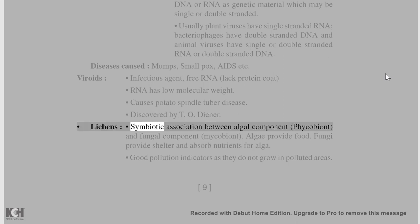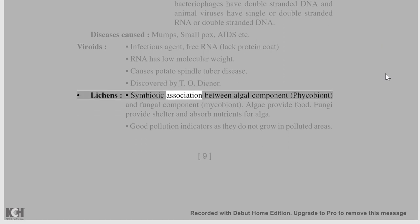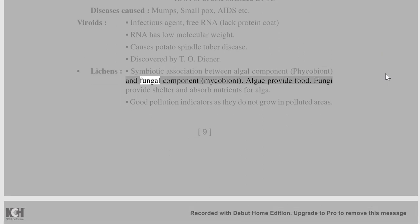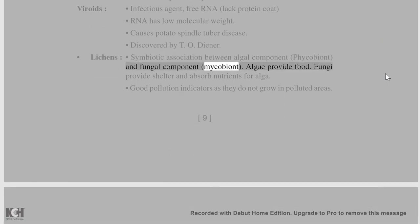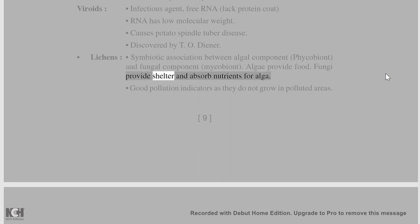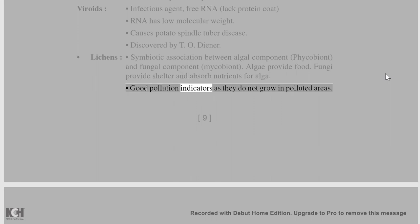Lichens are a symbiotic association between an algal component (phycobiont) and a fungal component (mycobiont). Algae provide food while fungi provide shelter and absorb nutrients for the alga. Lichens are good pollution indicators as they do not grow in polluted areas.